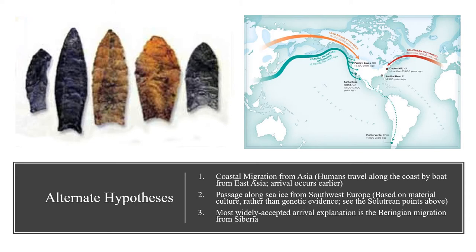Some scholars have proposed an alternate explanation for how the Americas' first people came here. They propose that the Americas' first human residents came from what is now Europe using small boats. This explanation is called the Solutrean hypothesis. Scholars who advocate for the Solutrean hypothesis argue that the first humans to arrive in the Americas used spear points that bore similarities to those used by the Solutrean culture that inhabited what is now Western Europe between 21,000 and 17,000 years ago. This hypothesis has not been confirmed by genetic discoveries, as human remains have not been found in the same layers of Earth strata as the spear points, so the most evidence-based explanation for the origins of America's first people remains the Beringian explanation.